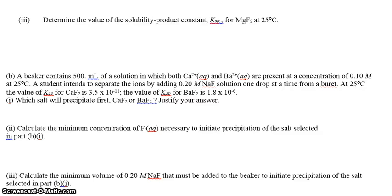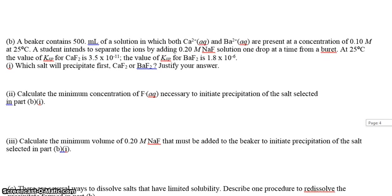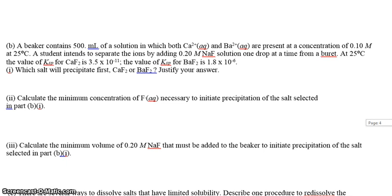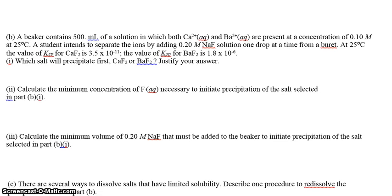This is video three of our chapter 4 AP exam review. This continues the first question we talked about last time. We have a beaker that contains 500 mL of a solution in which both calcium 2 plus and barium 2 plus are present. So we have ourselves a beaker and we have calcium plus 2 and barium plus 2 in the beaker. And the concentrations are given as 0.10 for both.